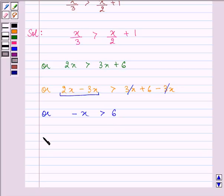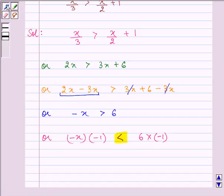On multiplying each side by a negative number, that is minus 1, we have minus x multiplied by minus 1. Similarly, 6 will get multiplied by minus 1, and since we are multiplying both the sides by a negative number, the rule of inequality says that the sign of inequality is reversed. So here we will have sign less than now. After simplification, it is x is less than minus 6.